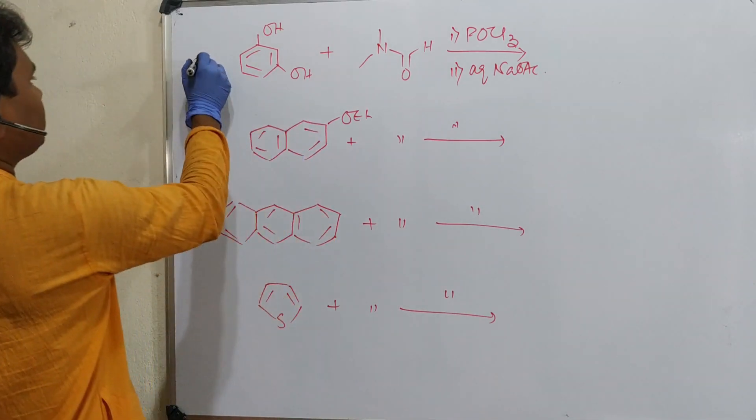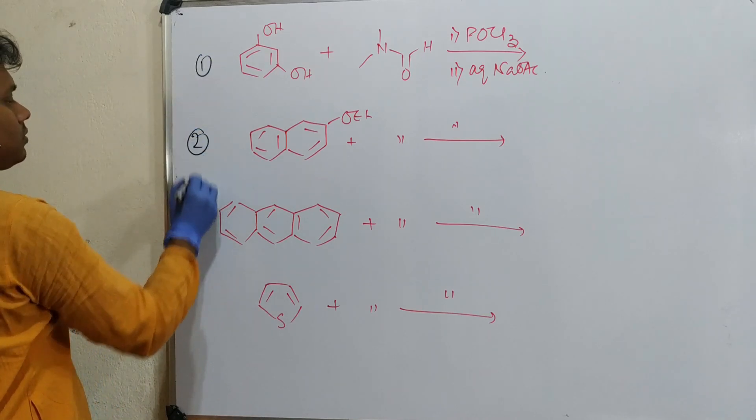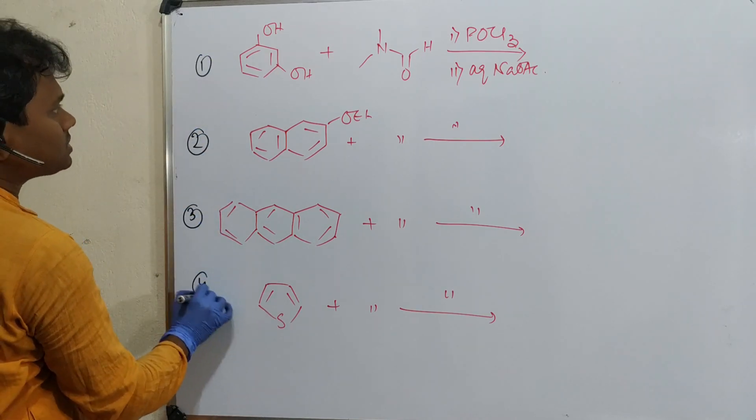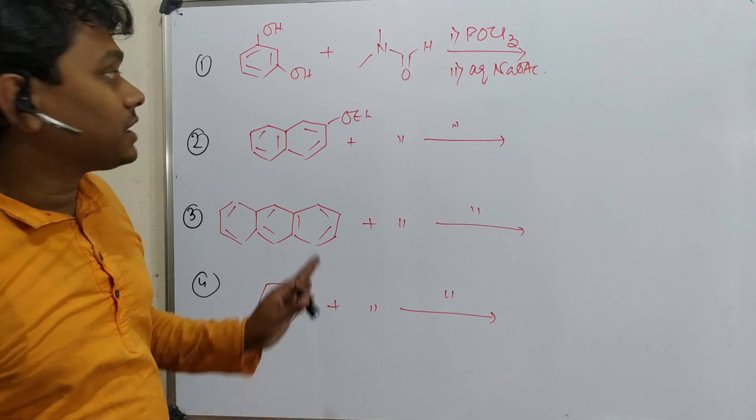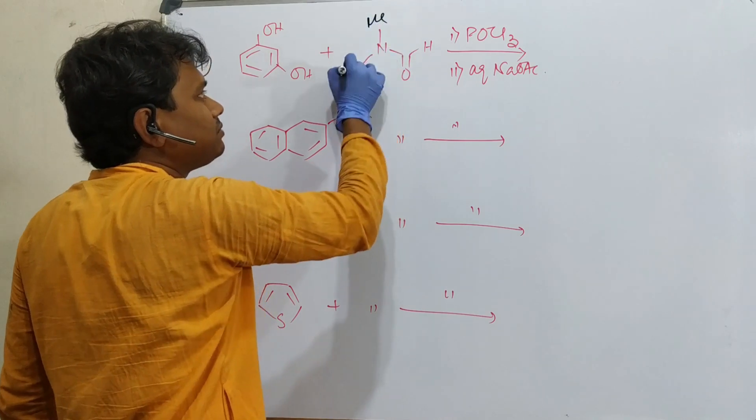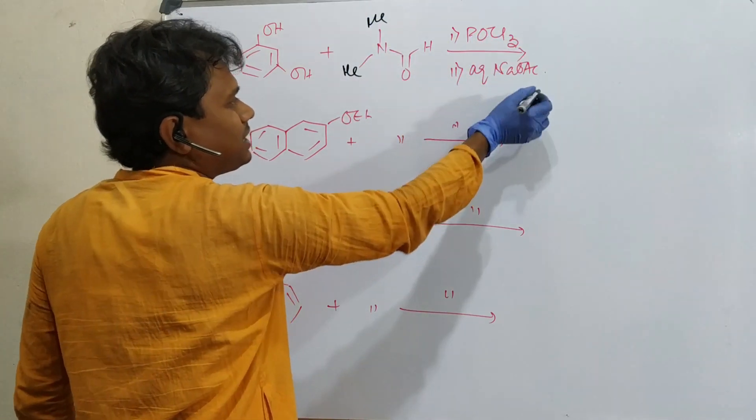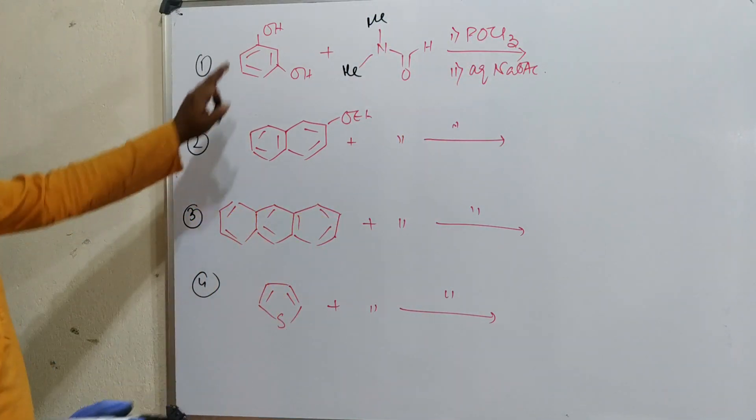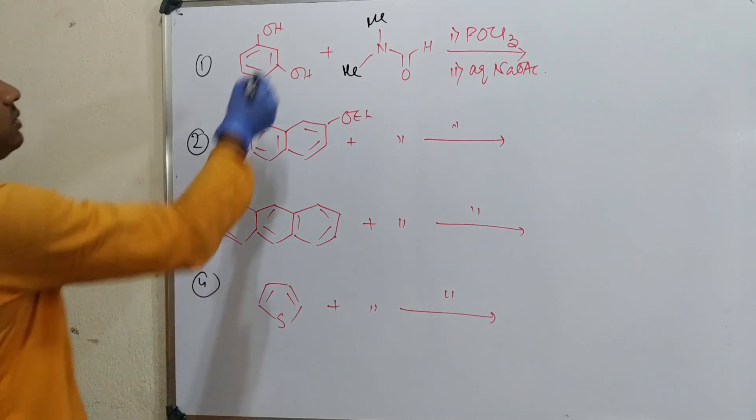Four examples are given. This is the Vilsmeier reaction. In every case, the reagent is same: DMF, dimethylformamide, and POCl3. So will this reaction happen here, here, or here?